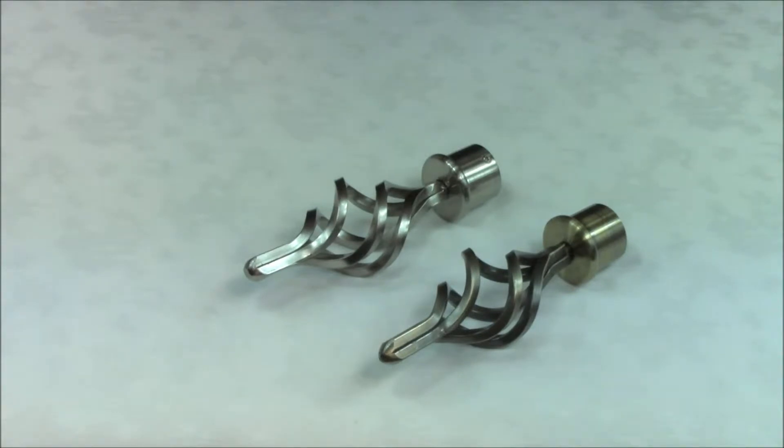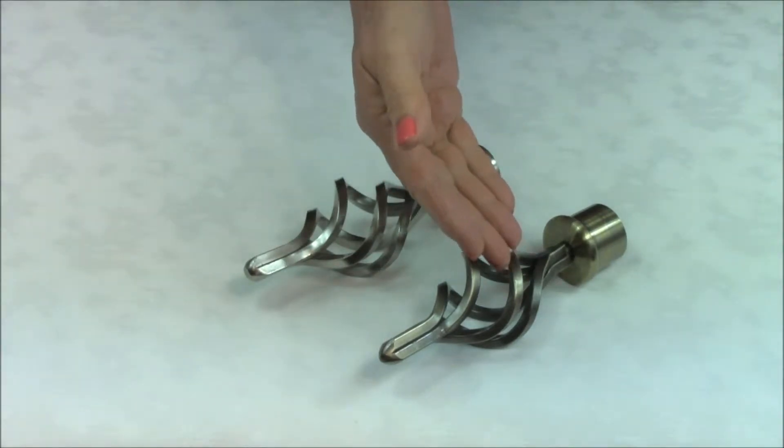These are the Speedy Piazza 28mm Curtain Pole Finials. They are available in satin silver and antique brass.